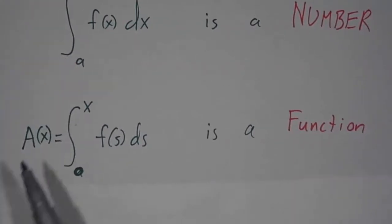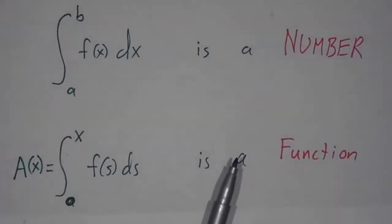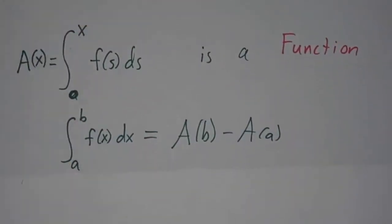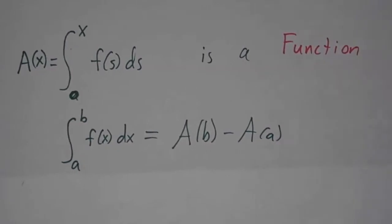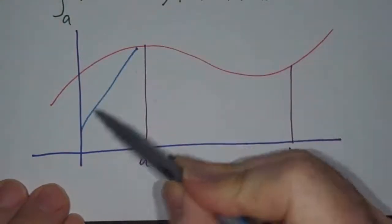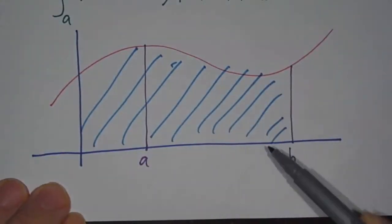But I claim if you understand this function, then you can figure out all the definite integrals you like, because I claim that the integral from a to b is the accumulation function evaluated at b minus the accumulation function evaluated at a, because the accumulation function evaluated at b is all of the area up to b.